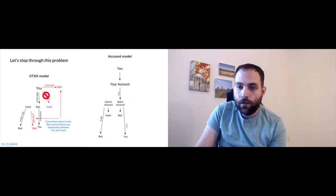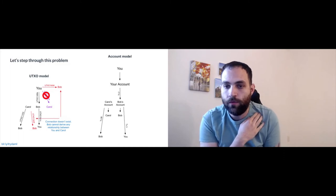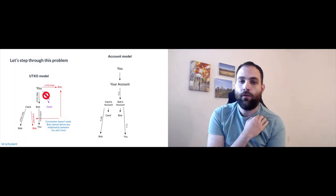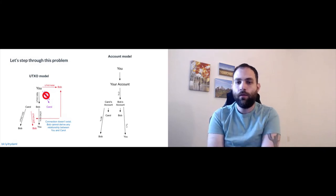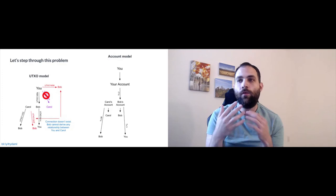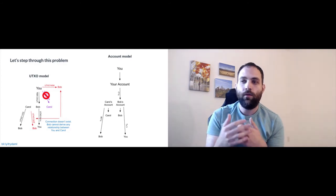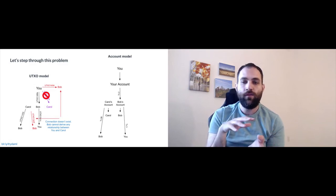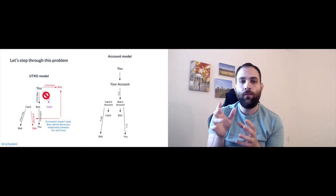Bob knows how this works because he started a project with you himself. So Bob tries to make one transaction with you and simultaneously another transaction with Carol to see if he can detect a relationship. But in the UTXO model, he quickly finds out the connection doesn't exist — there's no relationship between these two UTXOs. The one from you to Carol isn't visible to Bob in any way because no information leaks through.